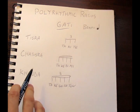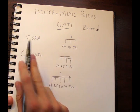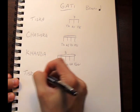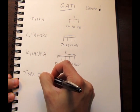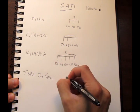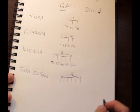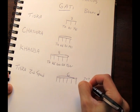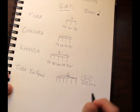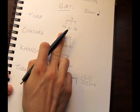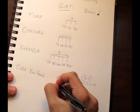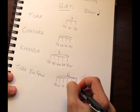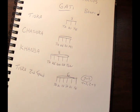The six-tuplet is going to be the triplet times two, so we are going to call it tisra second speed — six on top. Now there are many ways to add up to six, like three plus three, or four plus two, or two plus four. Right now we're going to use the three plus three syllables, so we take ta-ki-ta and repeat it once: ta-ki-ta, ta-ki-ta.